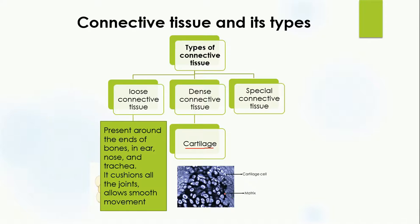An example of dense connective tissue is cartilage. Cartilage is made up of cartilage cells present in the matrix. It is found at the ends of bones, in the ear — the soft part of the ear is actually cartilage — as well as in the nose and trachea. The purpose of cartilage is to cushion all the joints, prevent friction or damage, and allow the smooth movement of the joints.